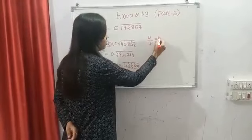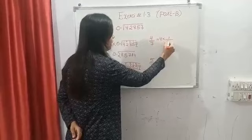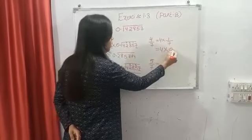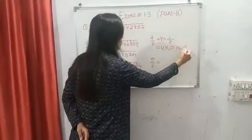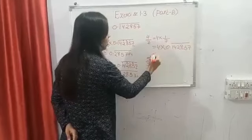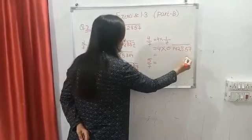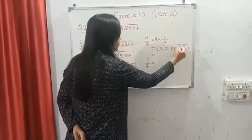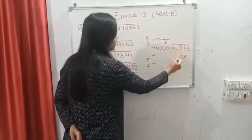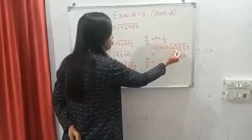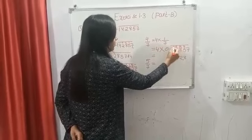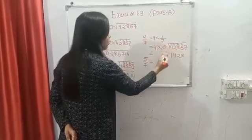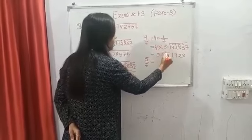Now let's move to 4 by 7. You will write it as 4 multiplied by 1 by 7, and you already know the value of 1 by 7 is 0.142857 bar. So 4 times 7 is 28, carry 2; 4 times 5 is 20 plus 2 is 22; 4 times 8 is 32 plus 2 is 34; 4 times 2 is 8 plus 3 is 11; 4 times 4 is 16 plus 1 is 17; 4 times 1 is 4 plus 1 is 5. So this will be 0.571428.